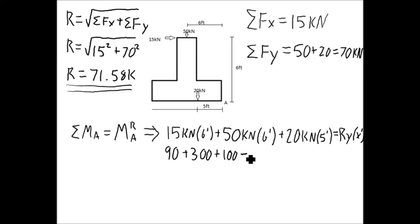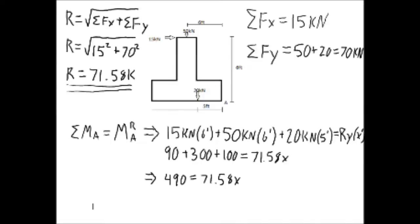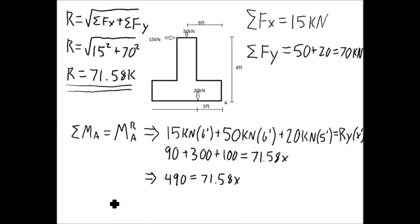The moment of the resultant about A will be 71.58 kN times its distance from A. Since we are trying to find the location, we do not know the distance and we can say that the distance x will be used to find this distance. Now, when we add up all the forces times their distance, we get 490, which is equal to the resultant of 71.58 times its distance from A, x, which is unknown. Now, we can take 490 divided by 71.58, which will give you a distance of x equals 6.85 feet, which is the location of the resultant from A.